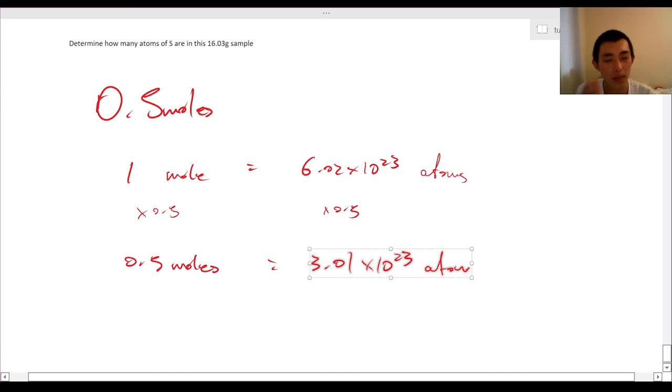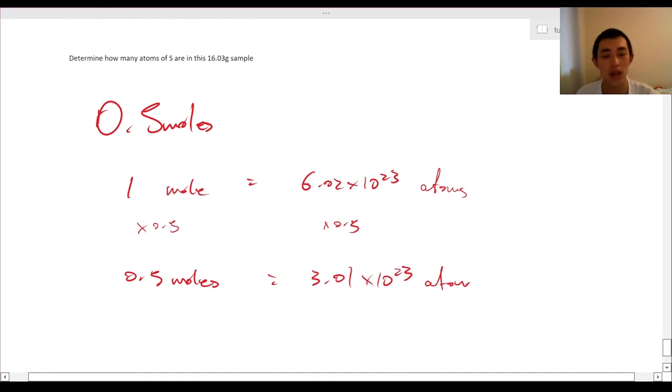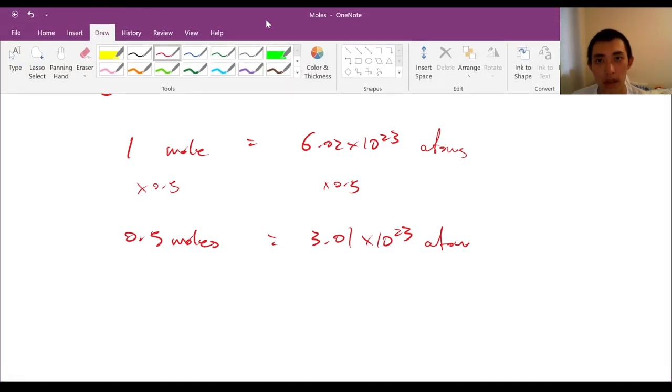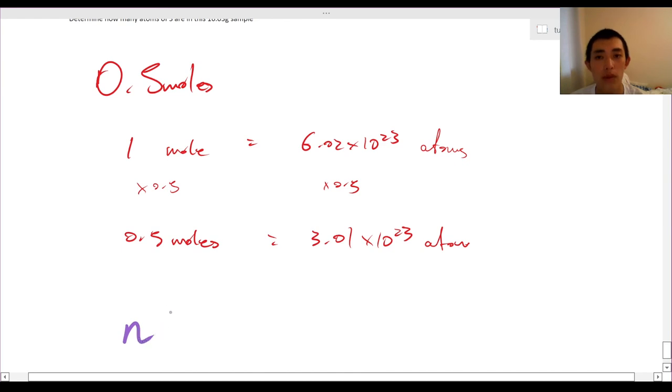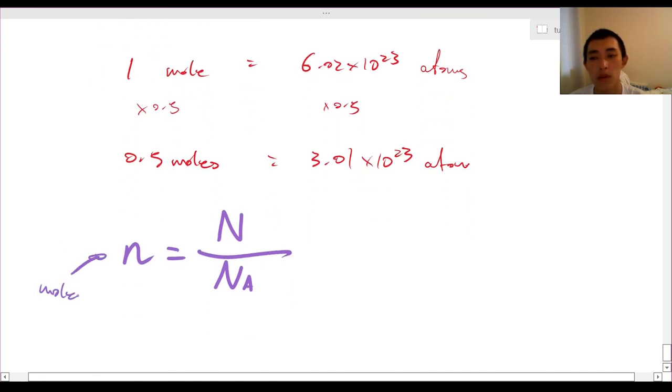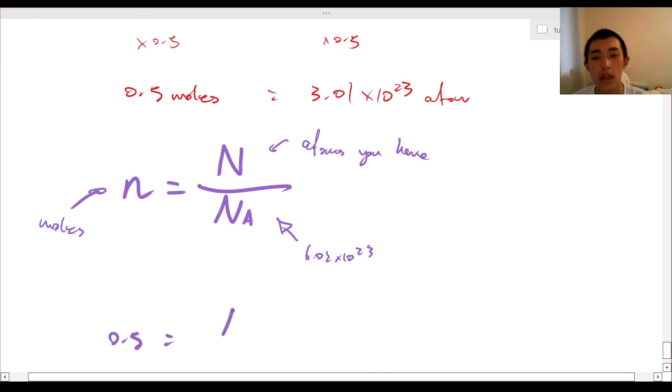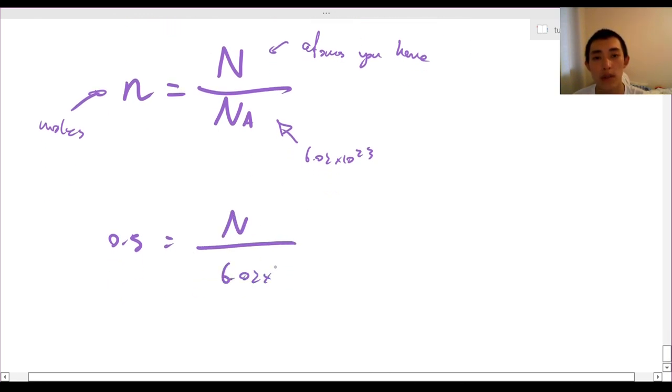Alright, I'll assume that you've come back and you've had a good crack at it. So the number of atoms is going to be, so I know I have 0.5 moles now. I know that 1 mole is equal to 6.02 times 10 to the power of 23 atoms. So what I might do is I might just multiply both sides by 0.5. And I have 0.5 moles is equal to 3.01 times 10 to the power of 23 atoms. You can see, this is all just very, very basic ratios. I multiply both sides and I have 3.01 times 10 to the power of 23 atoms. And that's the answer.